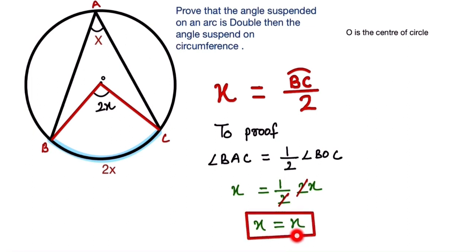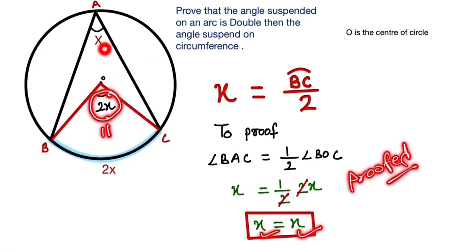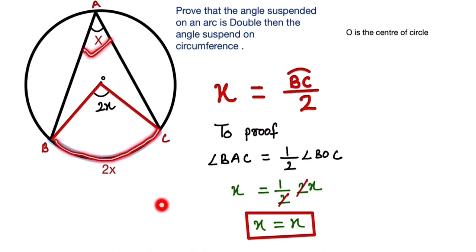We can now say that when an angle on an arc is given in degrees, it is always half that measure at the circumference of the circle. Thank you for watching. If you liked the video, please subscribe to our channel and share it with your friends.